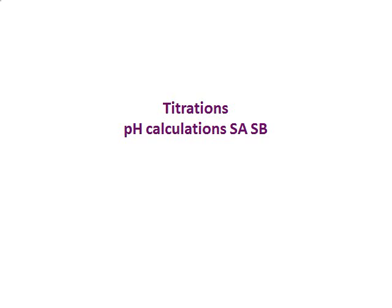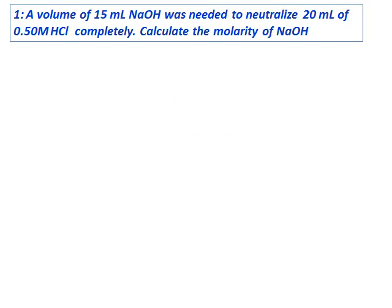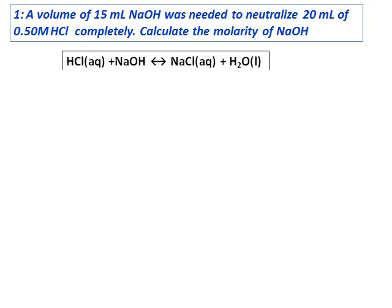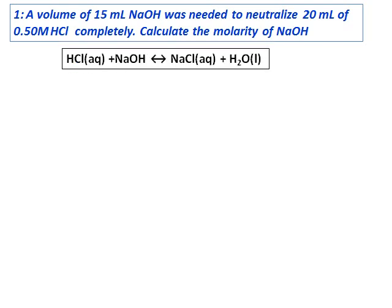We are going to do some pH calculations. This video will include only the pH calculations for a strong acid, strong base titration. A volume of 15 milliliters of sodium hydroxide was needed to neutralize 20 milliliters of 0.50 molar HCl completely. Calculate the molarity of sodium hydroxide. The reaction is represented as hydrochloric acid reacting with NaOH to give sodium chloride and water.